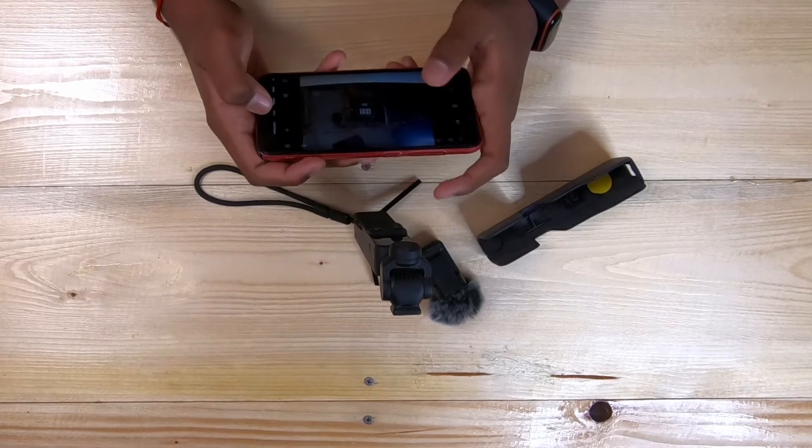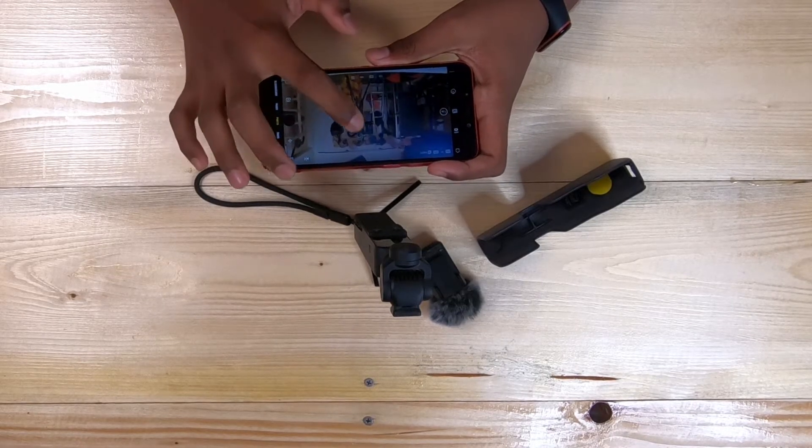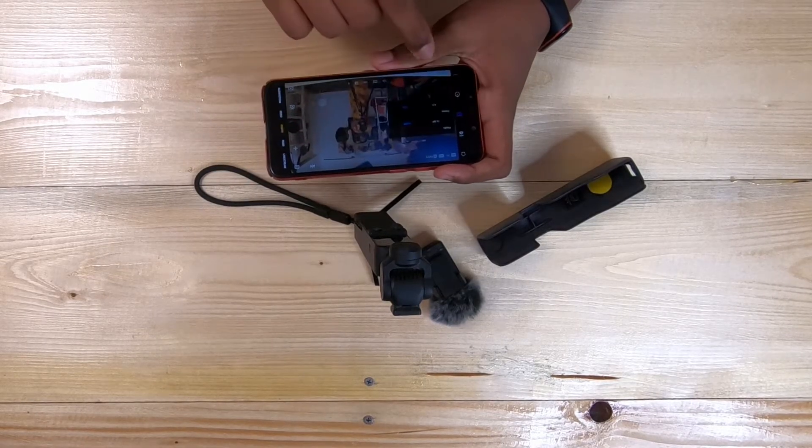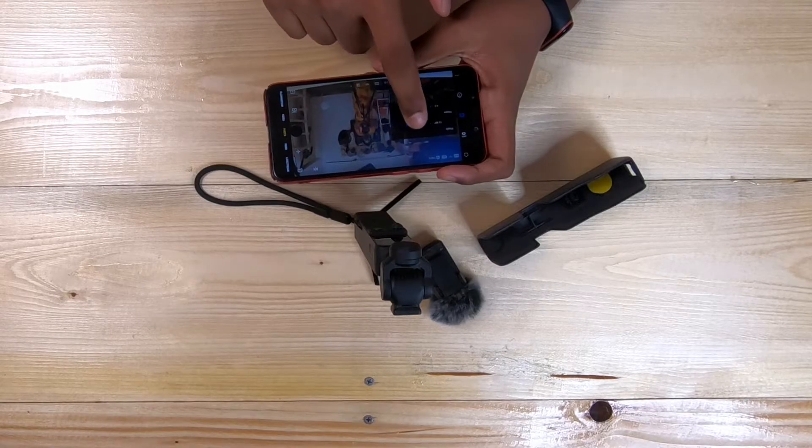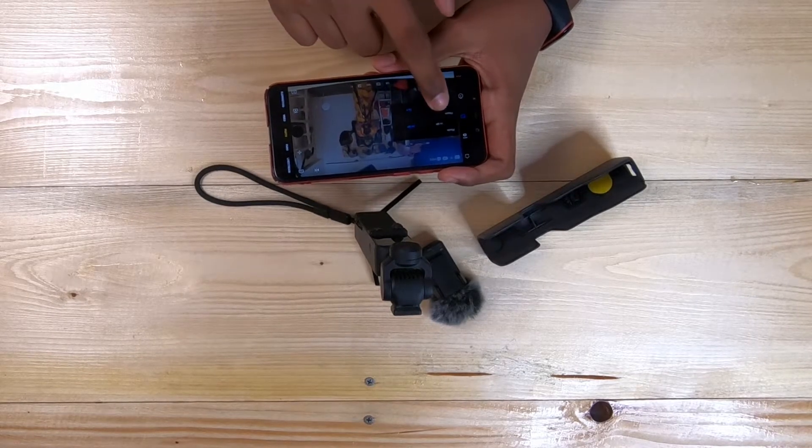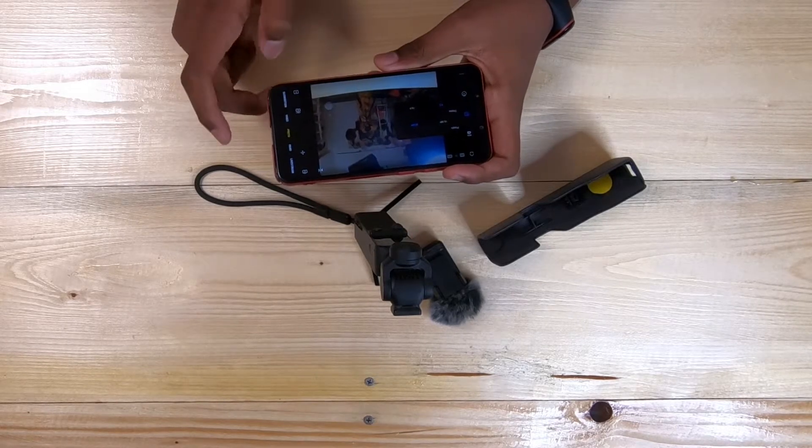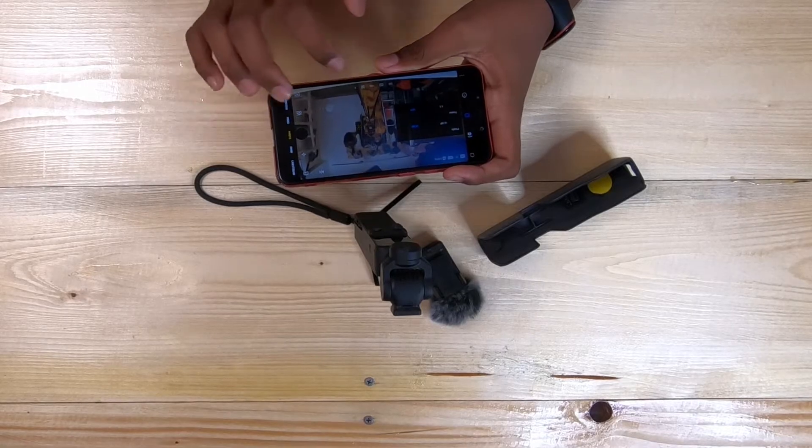So, now we are done with panoramic shots, and then we go to photo. So, now in photo, we can change the megapixels over here. You have 16 megapixels, and then you have 64 megapixels. Then you can change the frame, which is 4x3 ratio, and 16x9 ratio. It's very simple.